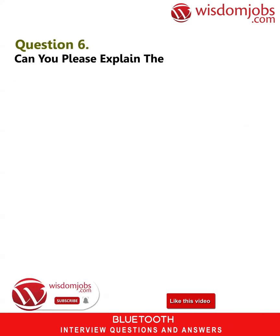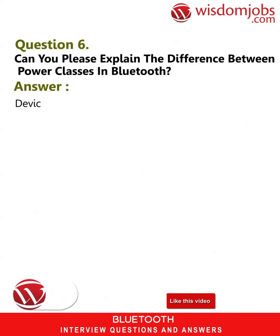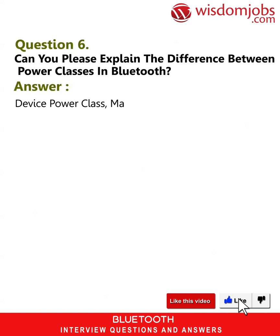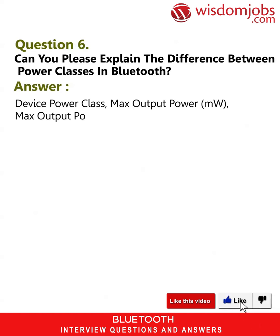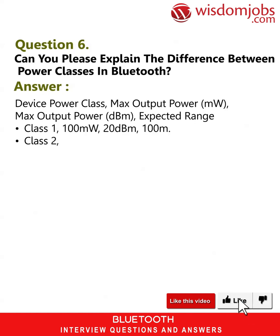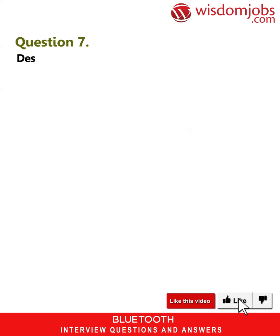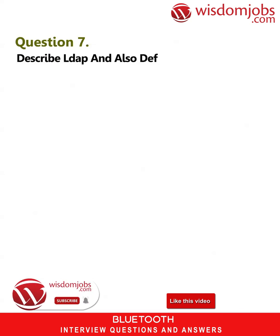Question 6: Explain the difference between power classes in Bluetooth. Answer: Class 1 has a max output power of 100 mW and 20 dBm, with a range of 100 meters. Class 2 has a max output power of 2.5 mW and 4 dBm, with a range of 10 meters. Class 3 has a max output power of 1 mW and 0 dBm, with a range of approximately 10 cm.